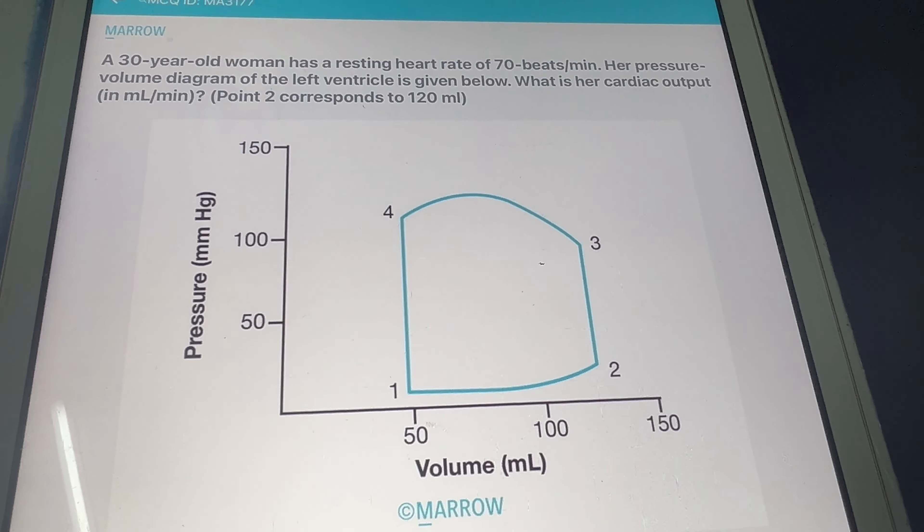To calculate the cardiac output, we need the heart rate, which is already given in the question. The stroke volume is calculated by end-diastolic volume minus end-systolic volume, which is 70. So we will multiply 70 with 70.